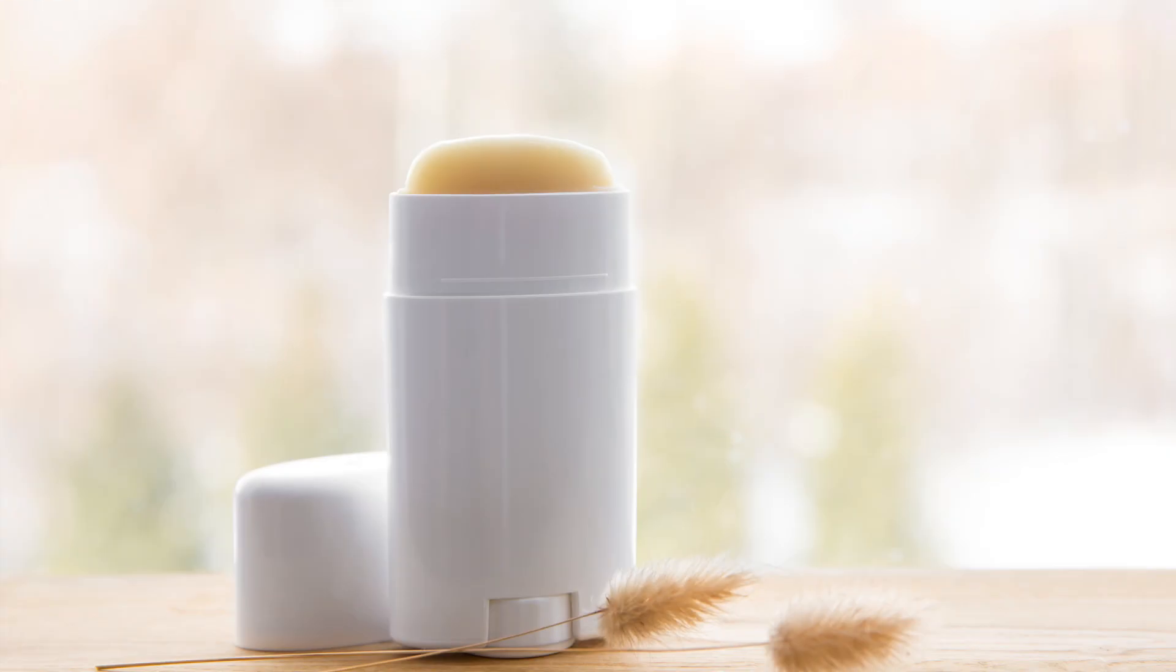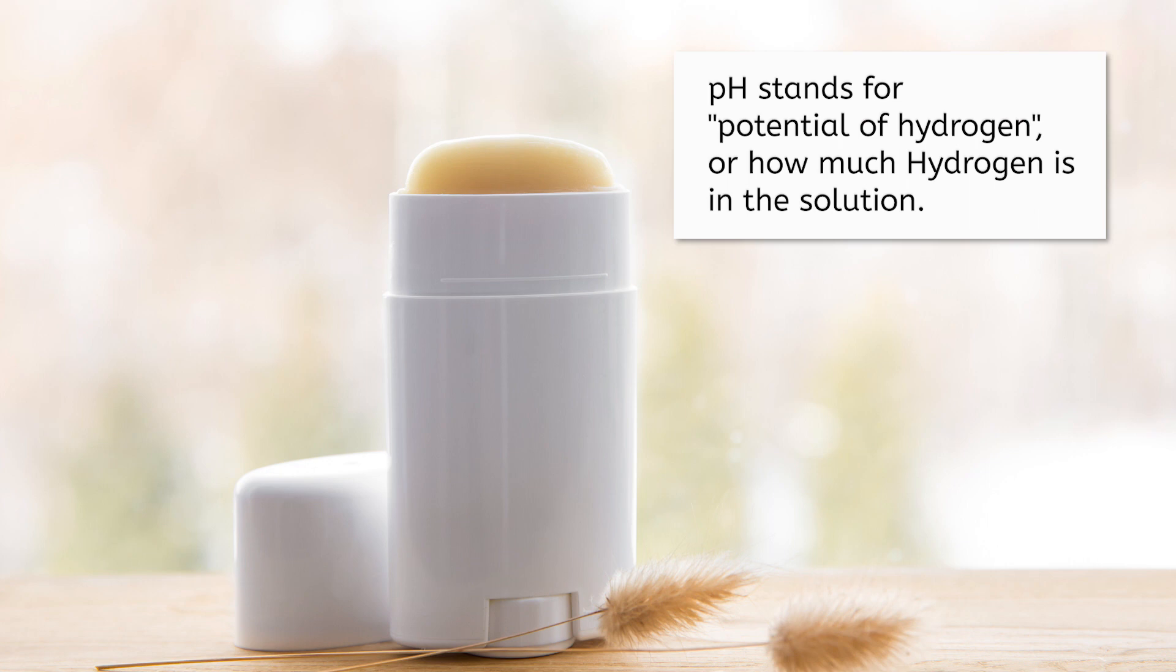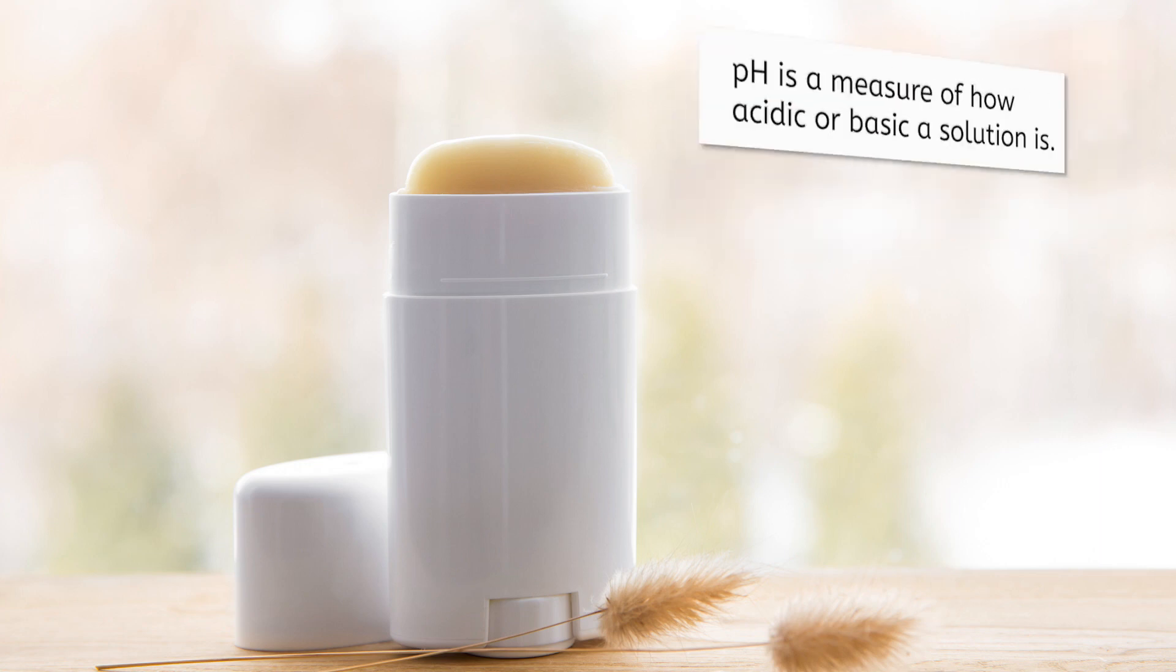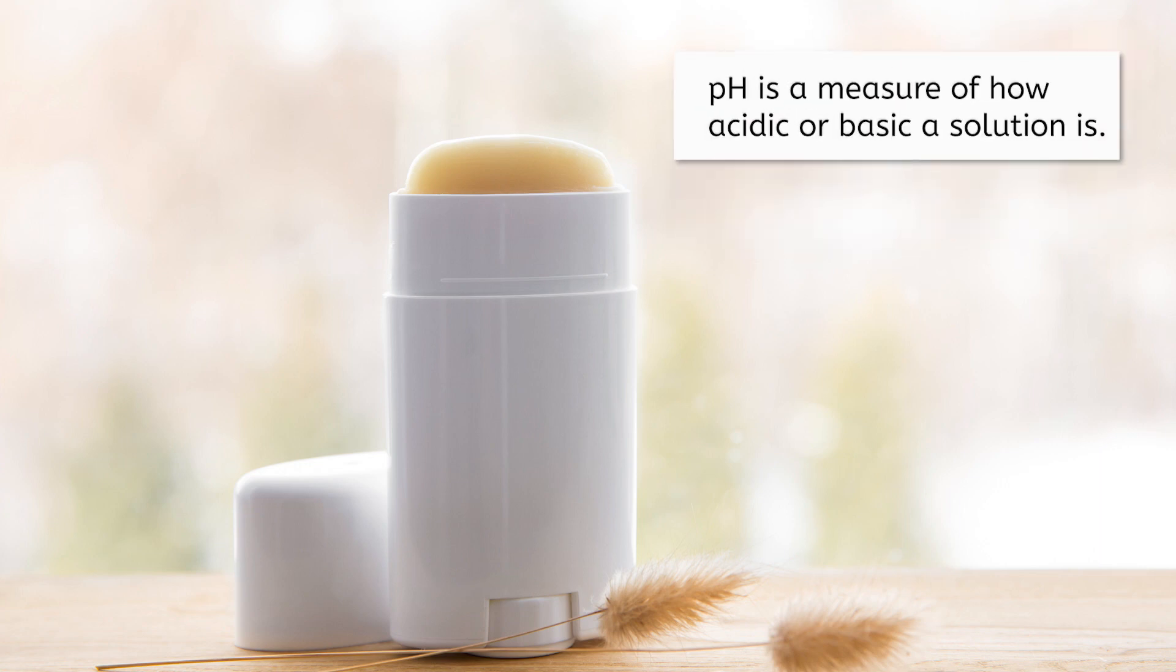Ever look at your deodorant and see the term pH balanced? Your body has a natural pH, which stands for potential of hydrogen, or how much hydrogen is in the solution. pH is a measure of how acidic or basic a solution is. When a deodorant is pH balanced, that means it works to help balance the natural pH of your skin to help with odor and perspiration.